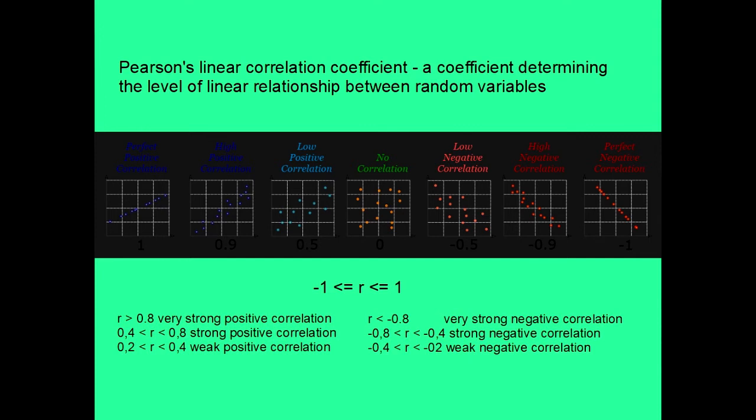If r is less than minus 0.8, then we have very strong negative correlation. And similarly to positive, between minus 0.8 and minus 0.4, we have strong negative correlation. And between minus 0.4 and minus 0.2, weak negative correlation.